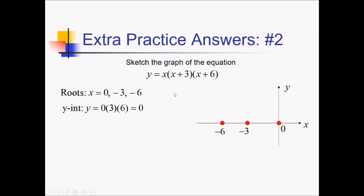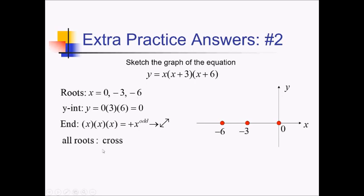Now for end behavior: we have x times x times x in standard form, giving us x-cubed as the highest term — a positive x to an odd power. This behaves like a y equals x line, so we start below the x-axis and end above it. All factors have single powers, so these are all single roots — we cross through all of them. Starting below the x-axis, we cross through negative 6, come back, cross through negative 3, come back, cross through the origin, and end above the x-axis, just like the end behavior says.